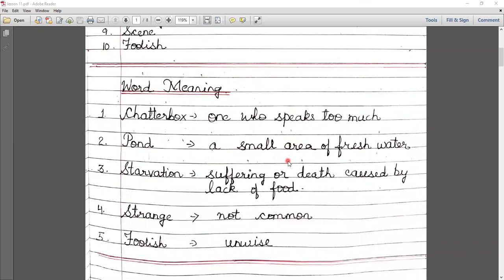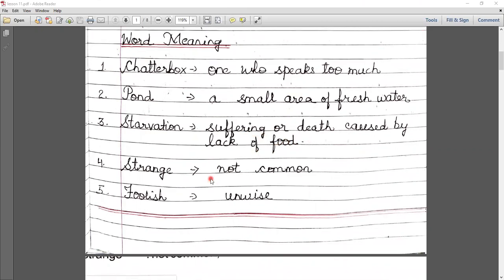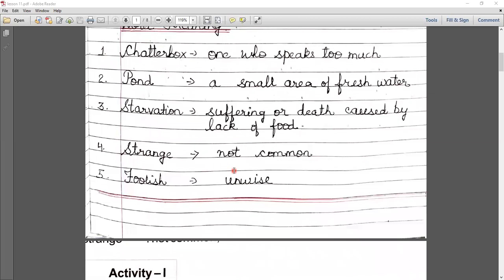Number second, pond: a small area of fresh water. Number third, starvation: suffering or death caused by lack of food. Starvation matlab kya hota hai - bhukhmari, jo kisi bhi bhukh ki wajah se, food ki jo kami hoti, uske karan ya to suffer hota hai ya uski death ho jati hai.